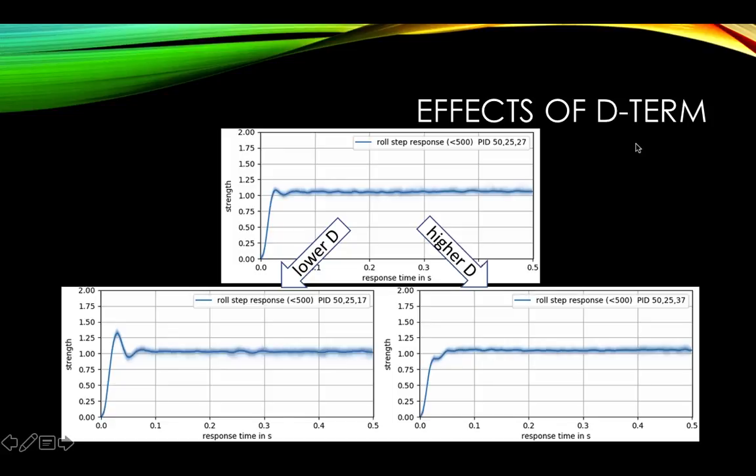So if D is too low, then you'll see here that it starts, P starts taking over, and it starts overshooting too much. And this is going to create oscillations, essentially, in your quad. And again, having a proper D will basically give you a line that looks like this. Again, little to no overshoot, and then just a flat line after that. It's holding out a strength of 1.